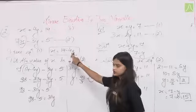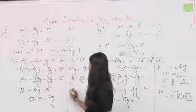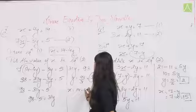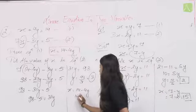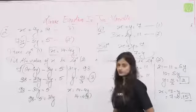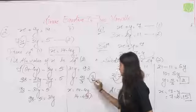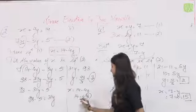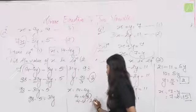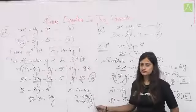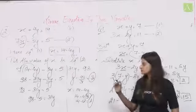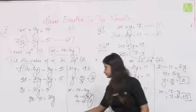अब y की value यहाँ put करते हैं: x = 14 − 4y = 14 − 4(3) = 14 − 12 = 2। तो x = 2 और y = 3। इन दोनों equations का एक solution मिल गया।